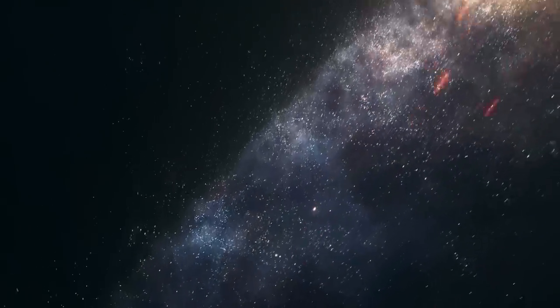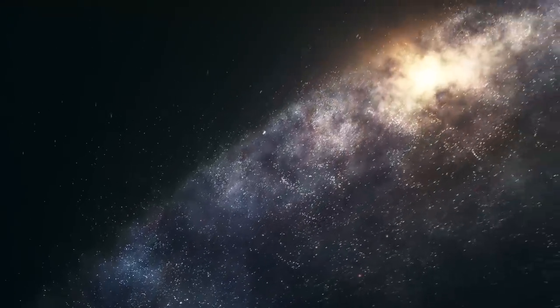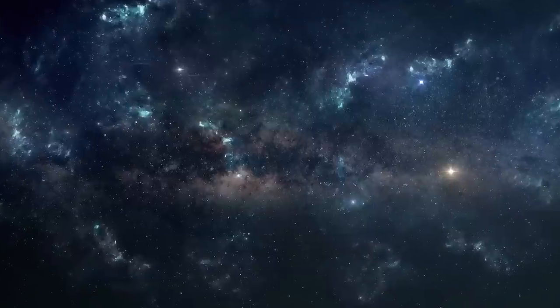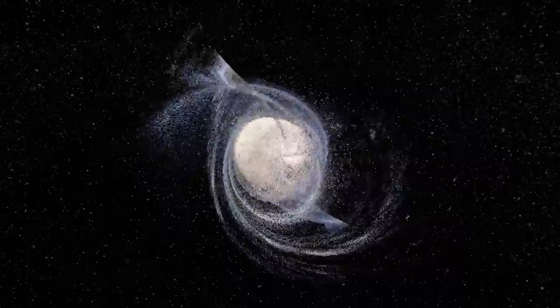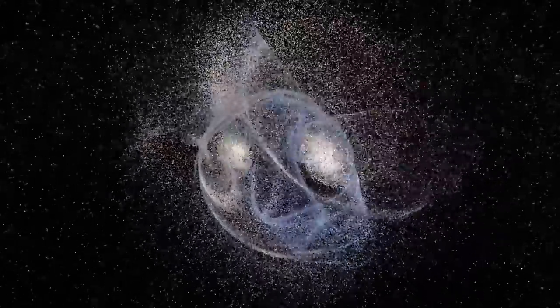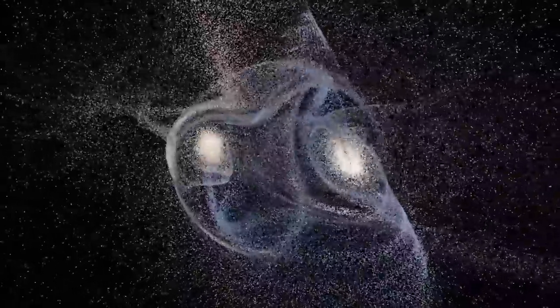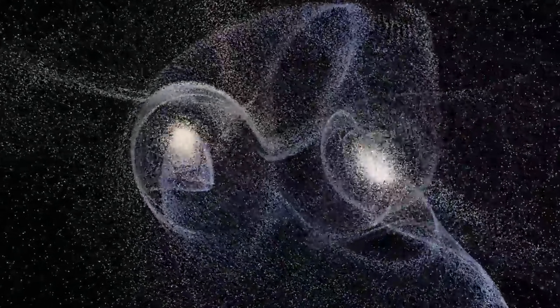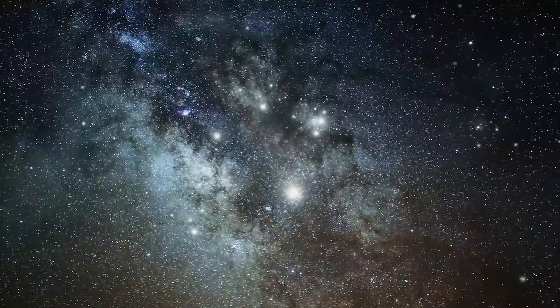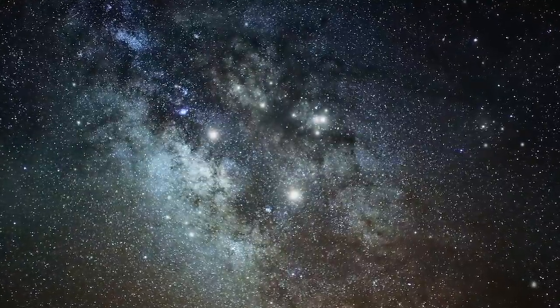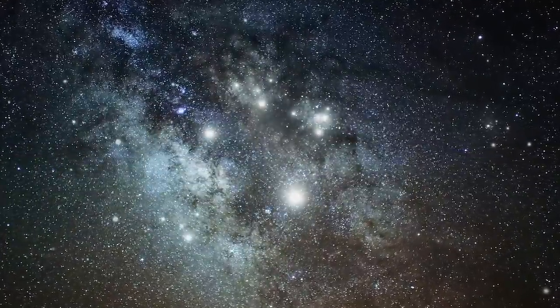The process can take millions or even billions of years, depending on the size and mass of the galaxies involved. During a merger or accretion event, the gas, dust, and stars of the two galaxies can be thrown into chaotic motion, leading to the formation of new structures such as tidal tails, bridges, and rings. The gas and dust can also trigger the formation of new stars, leading to bursts of star formation in the merged galaxy.